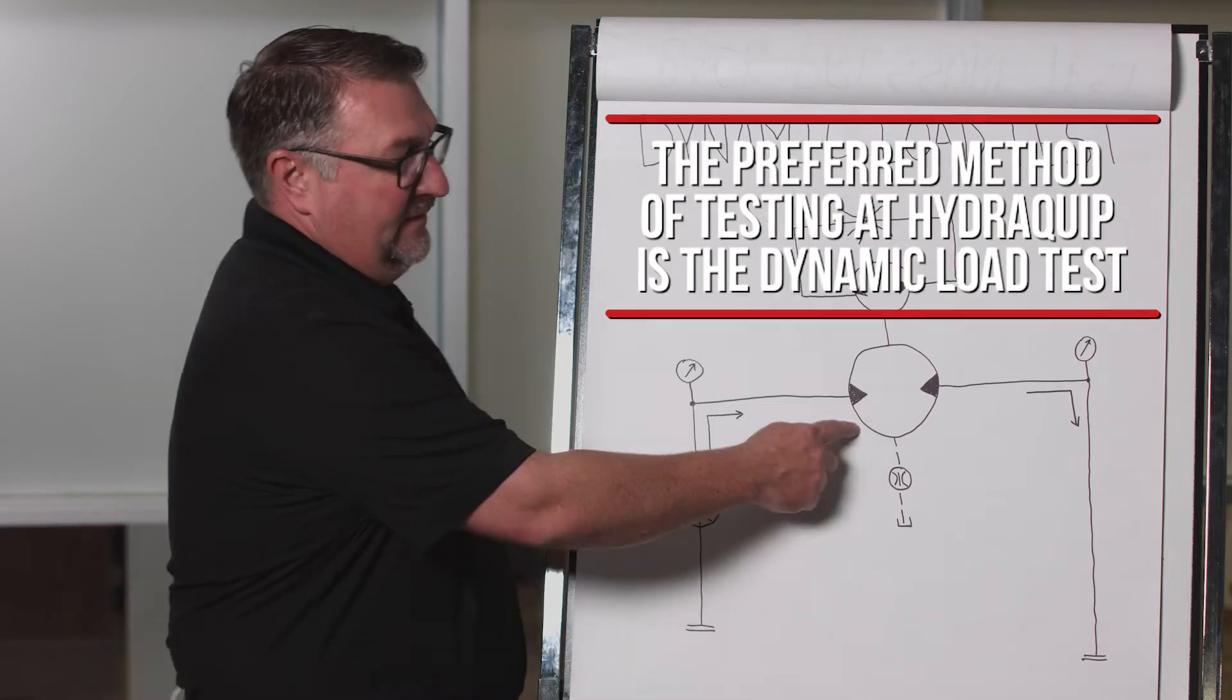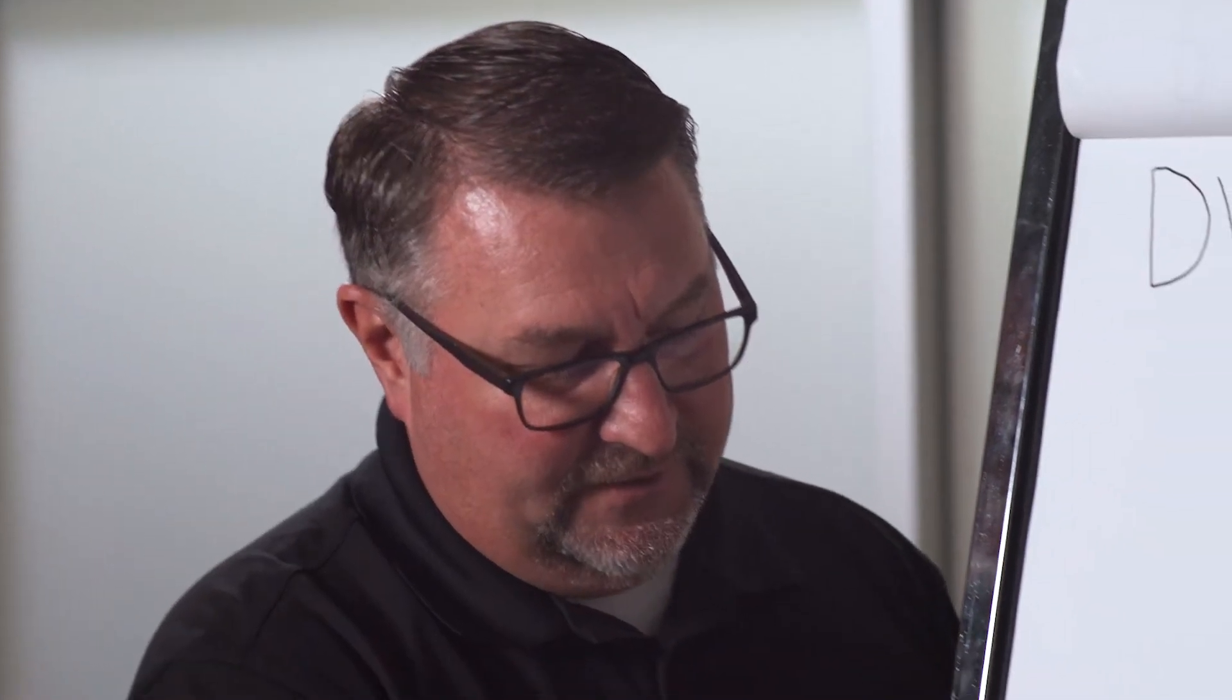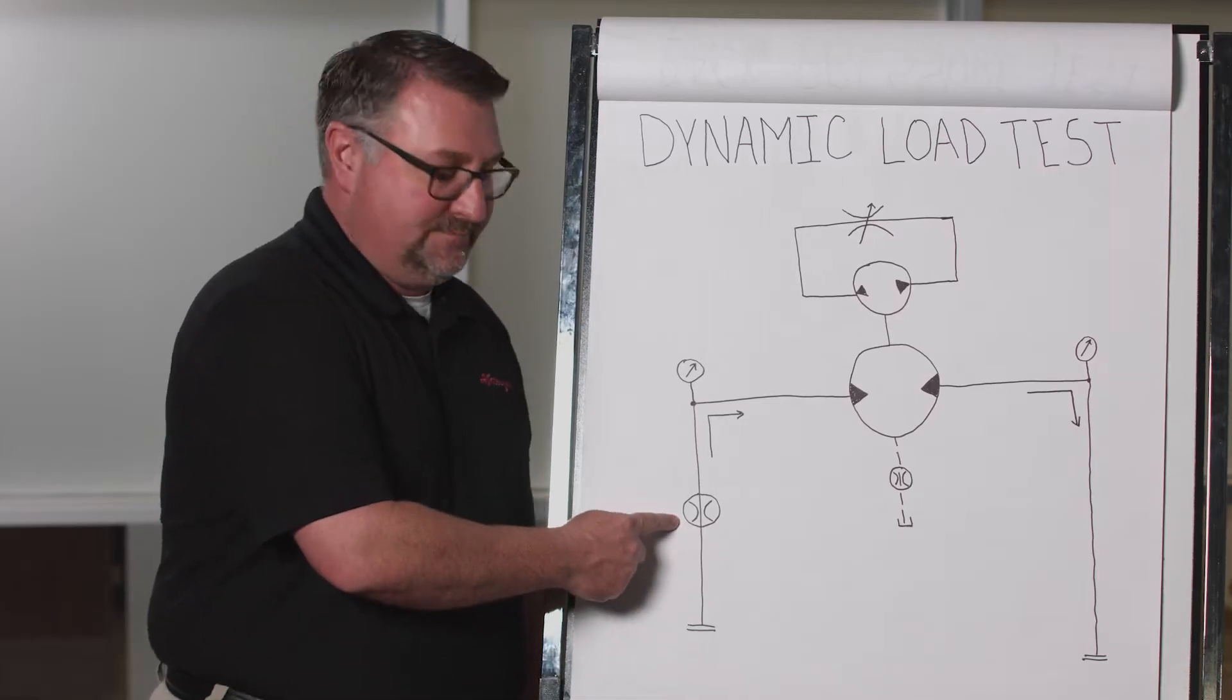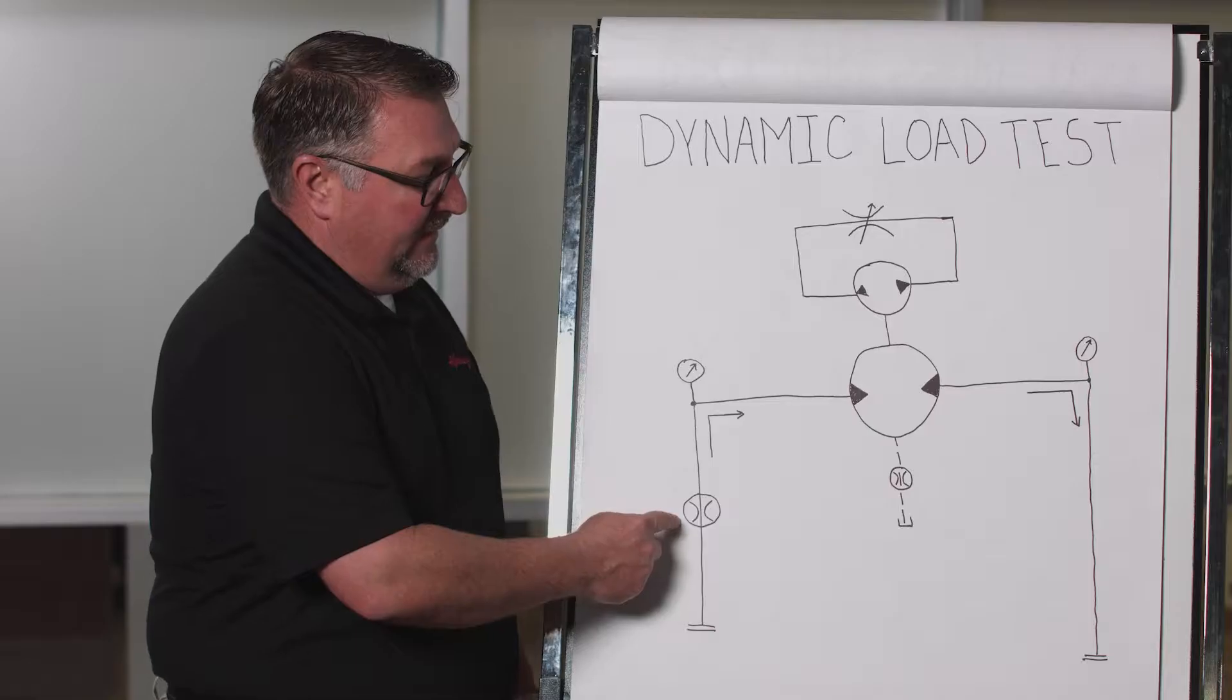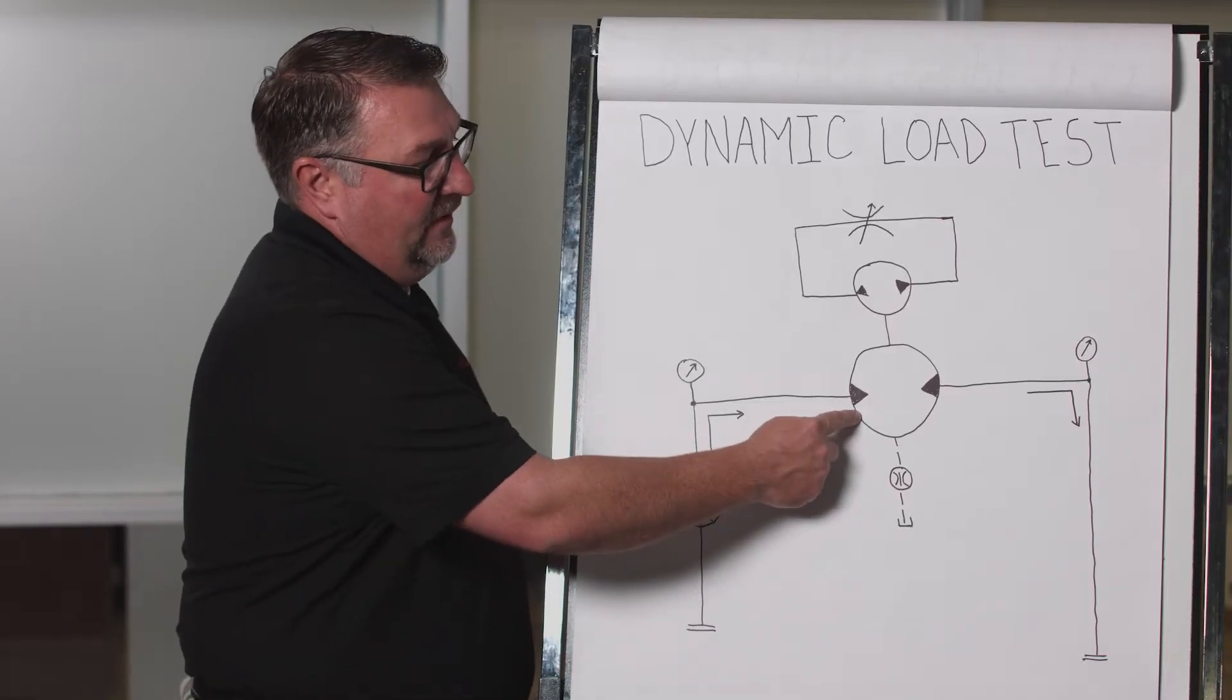We're going to be utilizing a Danfoss series 90 motor and we're going to bring flow into the circuit across a flow meter, maintaining 35 gallons per minute throughout the test and bringing in the flow into the hydraulic motor.